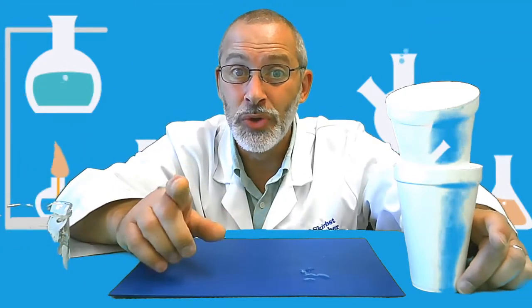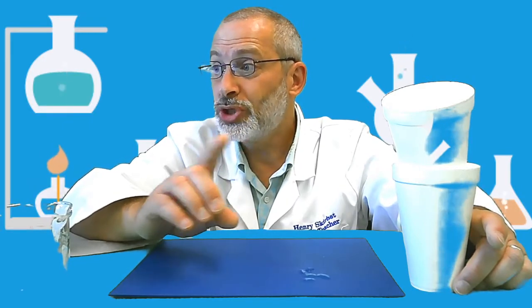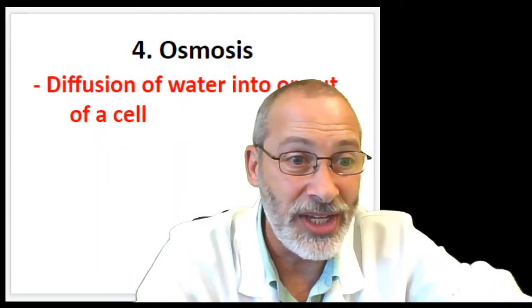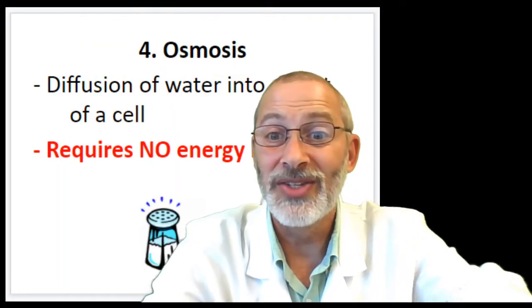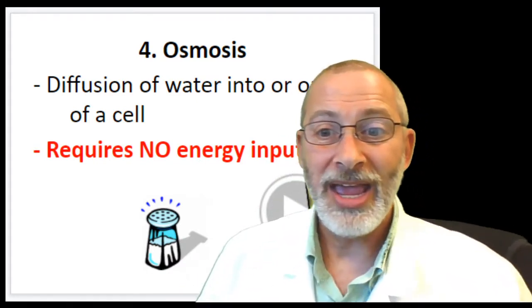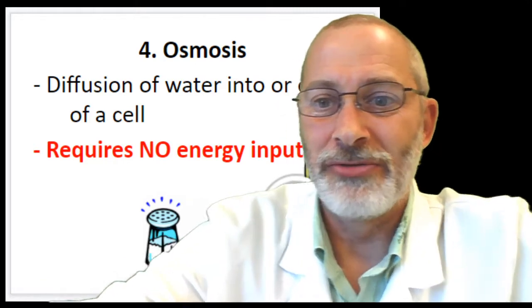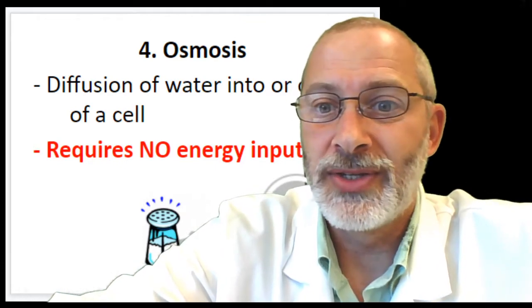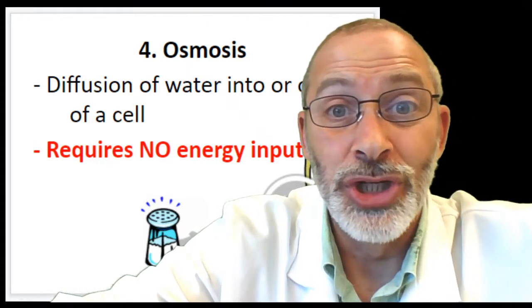That's kind of an illustration of osmosis. Again, osmosis is a special type of diffusion. Remember, diffusion does not require energy. And as we head back to our notes here, you will see that osmosis also does not require any energy. There is no energy input in osmosis. Now, I'm trying to hide something here for a reason. So, osmosis, the diffusion of water into or out of a cell and it requires no energy input.